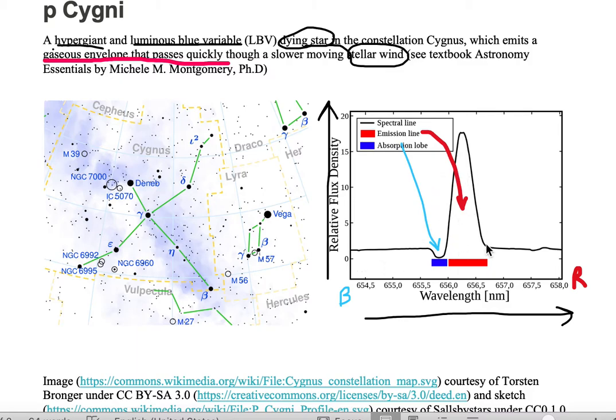Now the wind itself is going to be emitting, and so we get the red side of the line of emission in this P. Cygni profile.